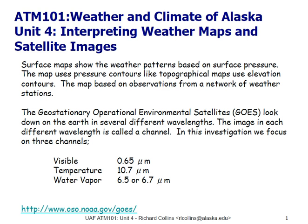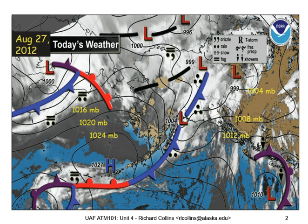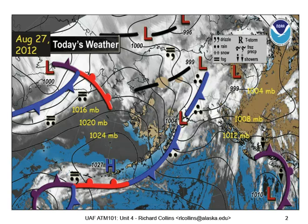We'll start by looking at a surface weather map. This map represents the weather map produced by the National Weather Service in Anchorage for August 27, 2012. The map is a composite of the surface weather map with surface weather symbols and a false-color black and white cloud cover map based on infrared satellite information. We'll start with the surface weather map features and discuss the infrared satellite information later.